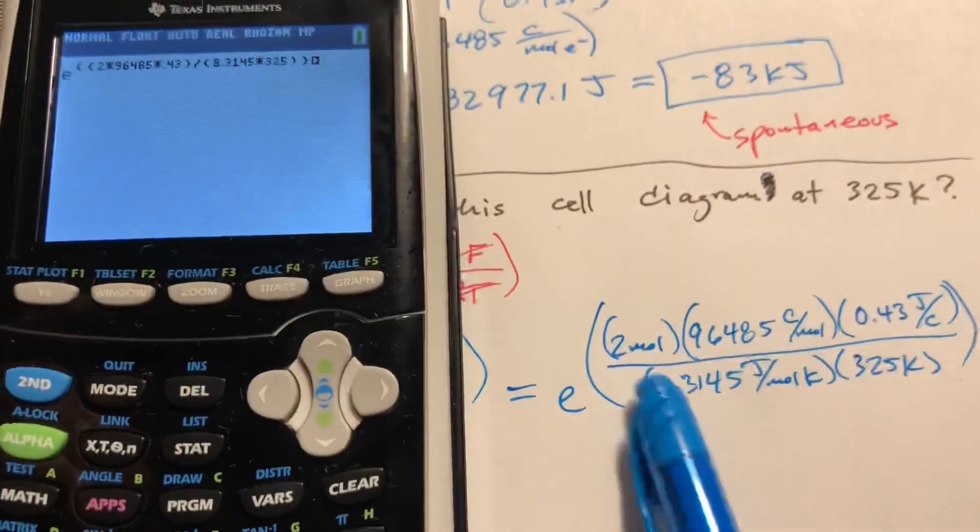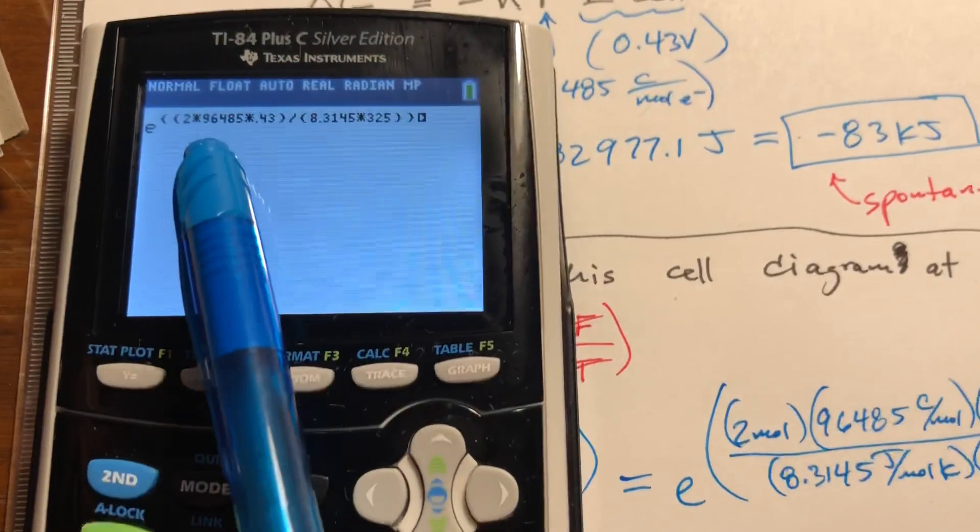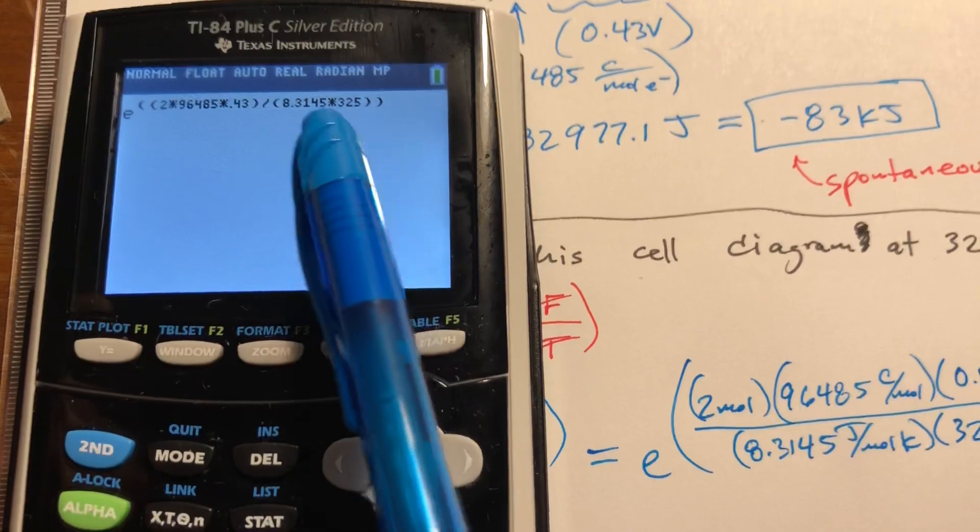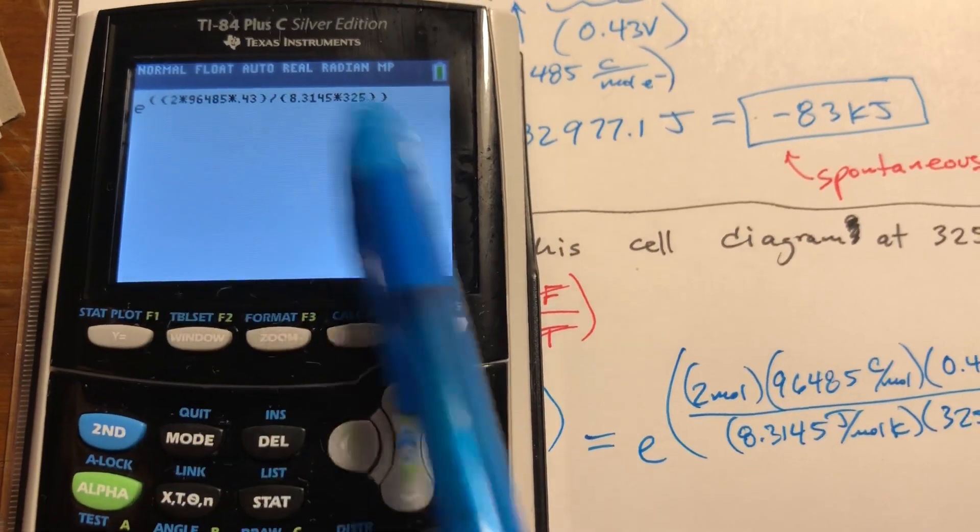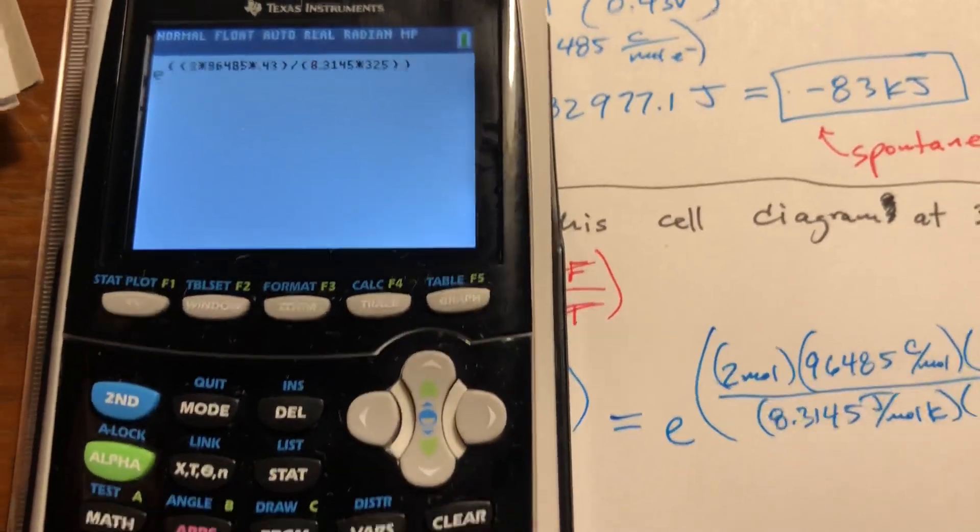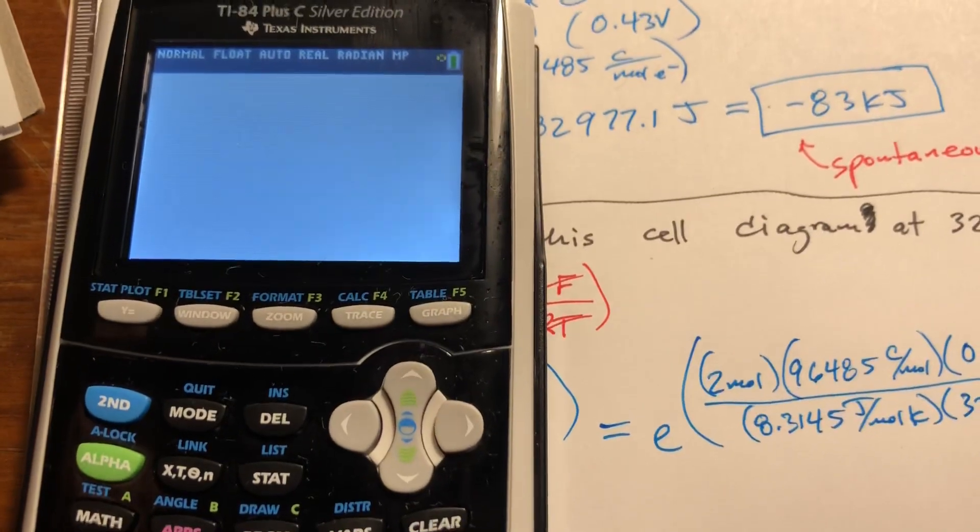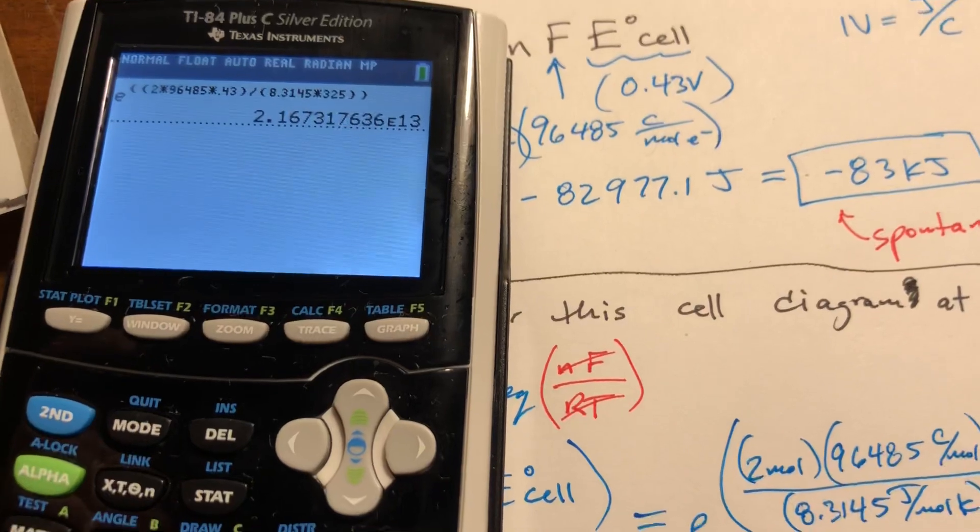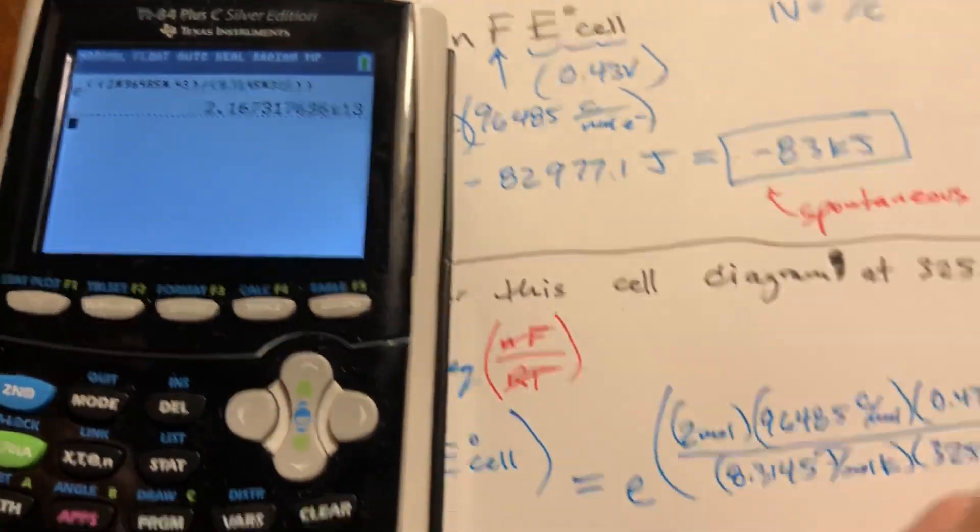So I've got essentially all of these things in one set of parentheses on the top multiplied together, and these things in parentheses on the bottom multiplied together. And all of that is in parentheses because it's an exponent for E. We're probably going to get a big number. Yeah. 2.17 times 10 to the positive 13th.